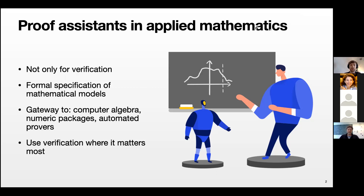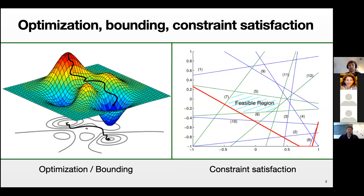To make proof systems usable, we need appropriate tooling. One interesting area is optimization and also bounding problems and constraint satisfaction problems, because these are used everywhere in engineering, industry, and finance. The focus is particularly on optimization problems because bounding and constraint satisfaction problems can be encoded as optimization problems — finding minima and maxima of functions, possibly with constraints on the domain.